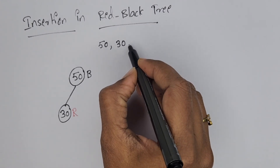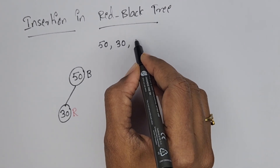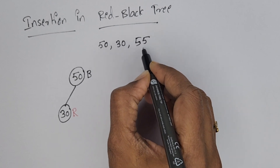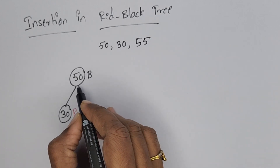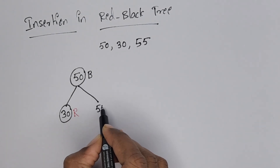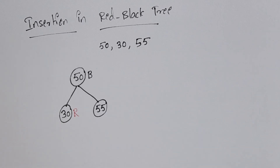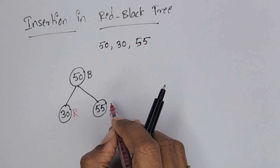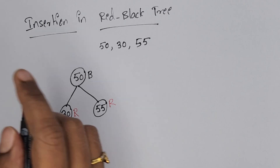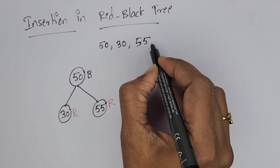Now I am going to insert one more element, 55. 55 is greater than 50, so we insert 55 on the right side. Always the new node is colored red. Again, the red node's parent is black, so no problem.